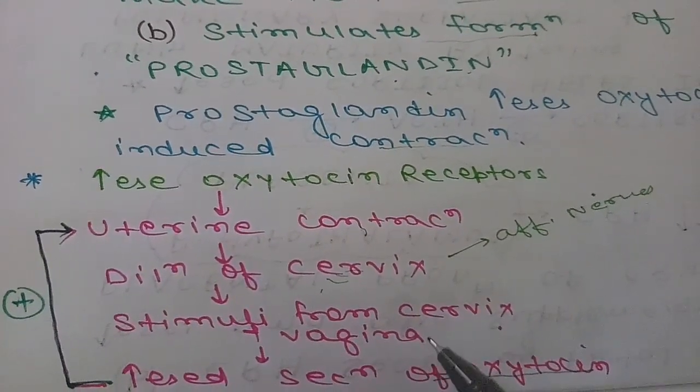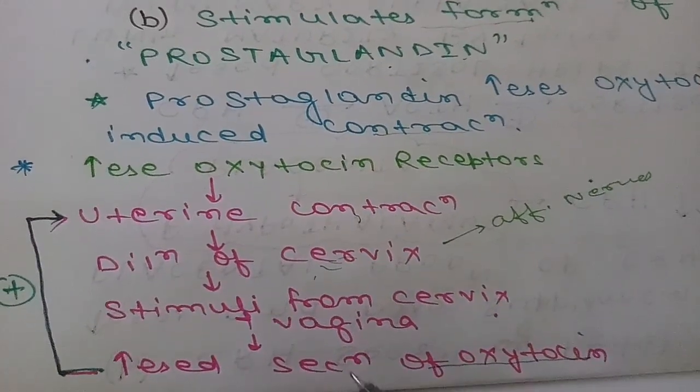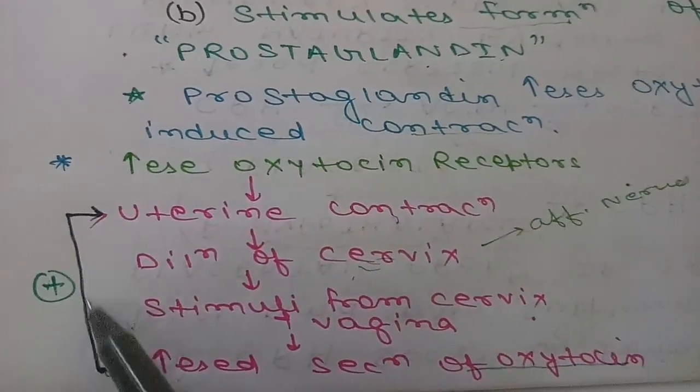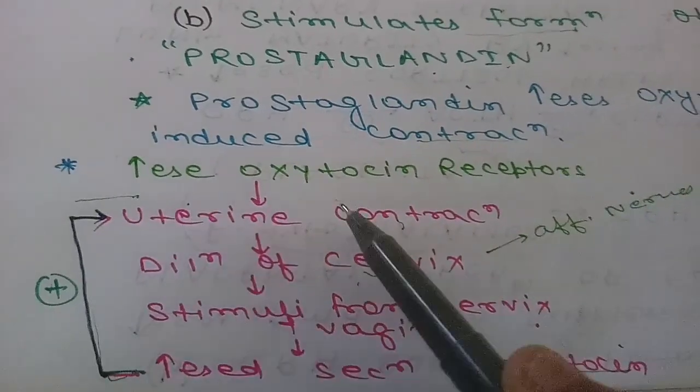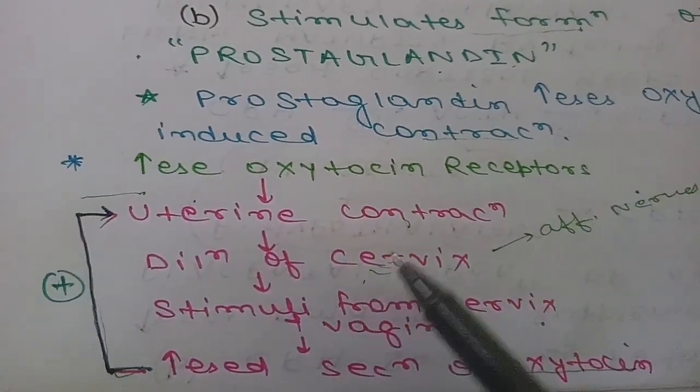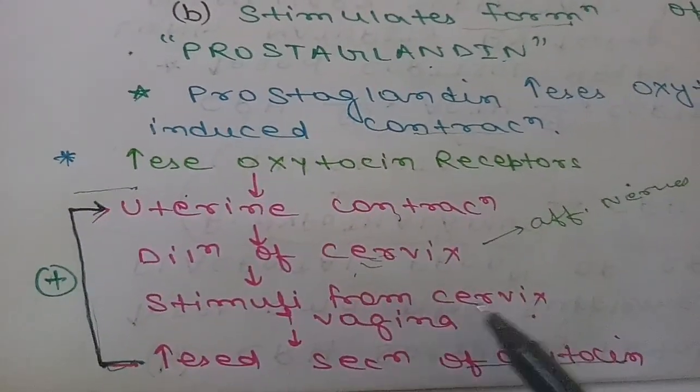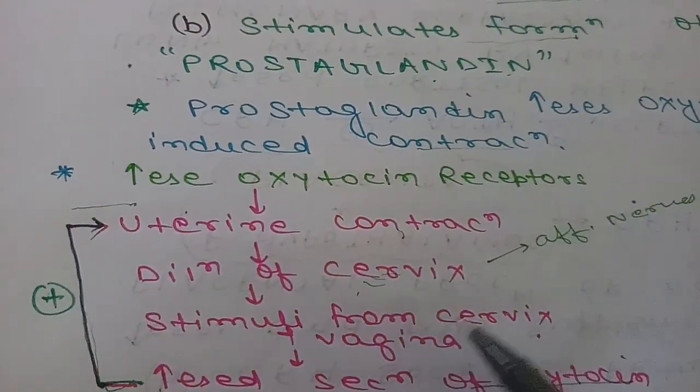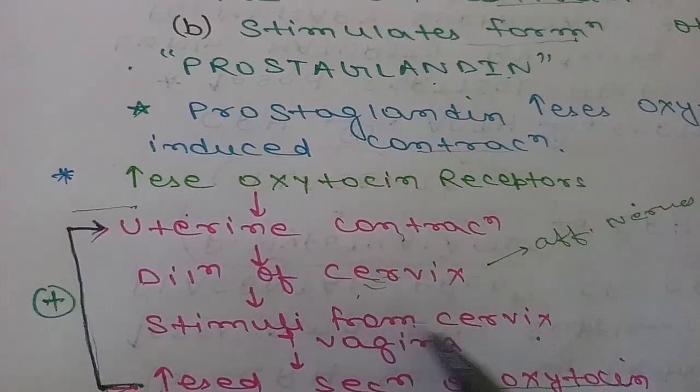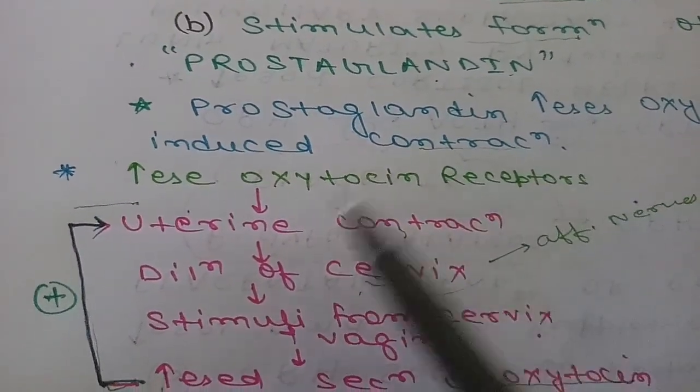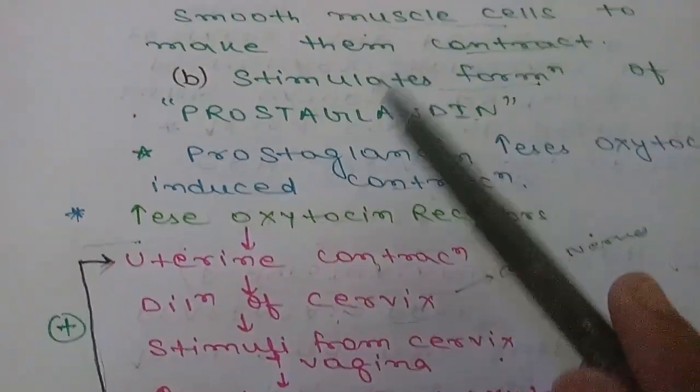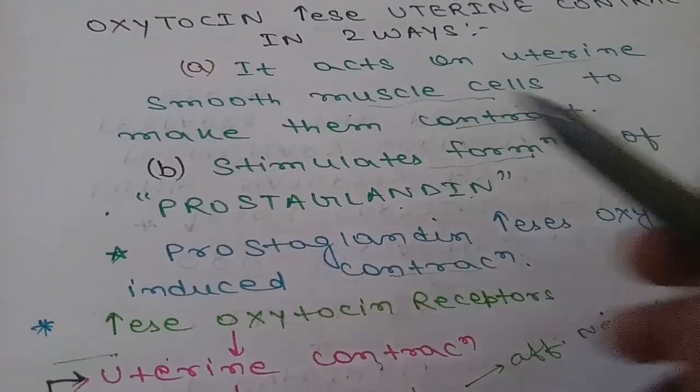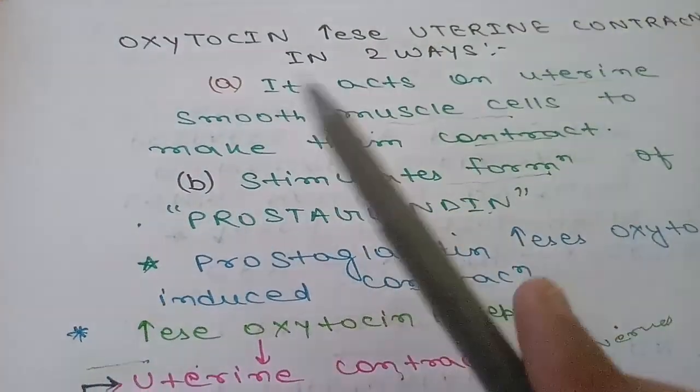The dilation of cervix sends stimuli from cervix and vagina by afferent nerves, which increases oxytocin levels. This increased oxytocin causes more uterine contraction. More contraction causes more dilation, more stimuli from afferent nerves, and more oxytocin secretion. So this works in a positive feedback loop. This was the effect of oxytocin during parturition.